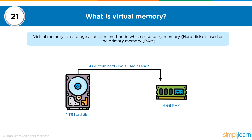The first question is on virtual memory — what exactly is virtual memory? For a computer, we have two types of memory. The first is primary memory, which is your RAM, also known as volatile memory. The secondary memory is your hard disk, where your data is stored permanently.